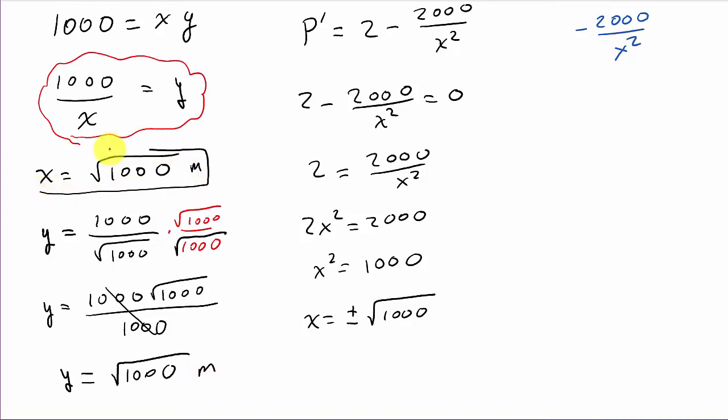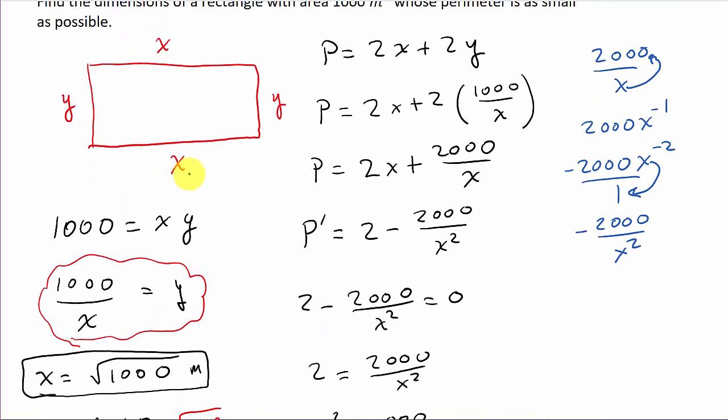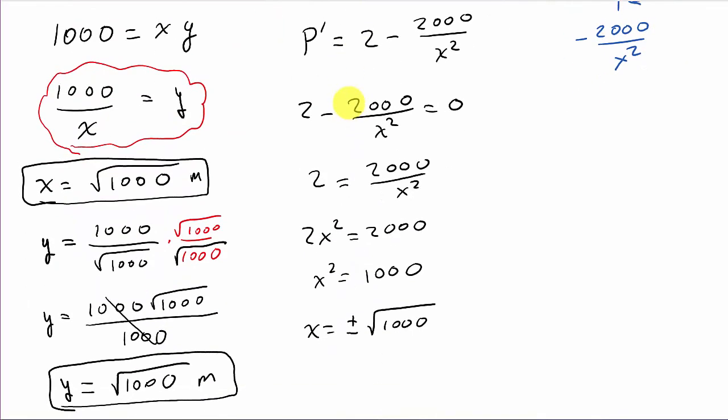And so, it's actually what? A square. And so, there's x and y, square root of 1000. Alright. So, I hope this helped. Give me a like, share, and subscribe, and check out my other videos. And thanks for watching.